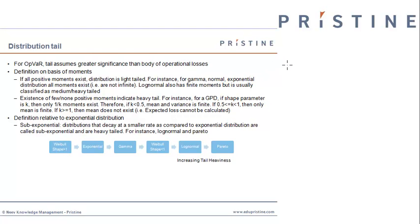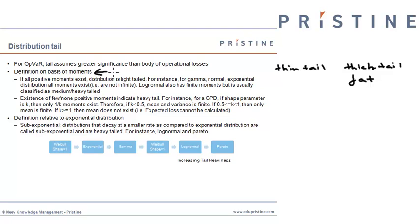Now let us see on what basis we can say whether a particular distribution has a thin tail or a thick tail. One definition could be on the basis of moments — by moments we mean mean, standard deviation, skewness, and kurtosis. If all the positive moments of a distribution can be estimated, then the distribution is light-tailed. For instance, for Gamma, normal, exponential, and log normal, all the moments exist and can be calculated, so these distributions are usually classified as thin-tail distributions.